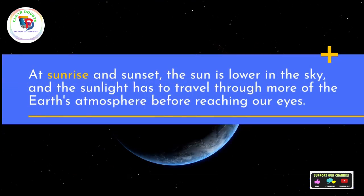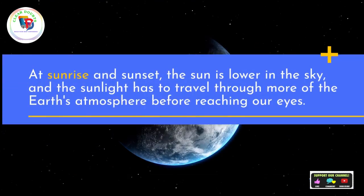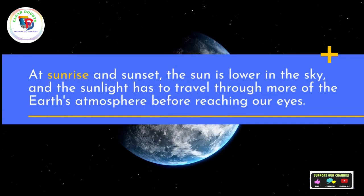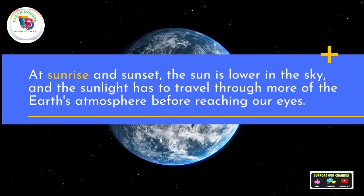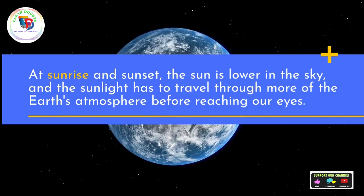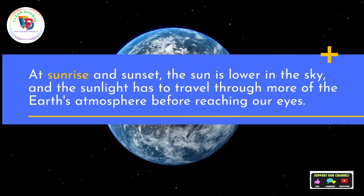At sunrise and sunset, the sun is lower in the sky, and the sunlight has to travel through more of the Earth's atmosphere before reaching our eyes.